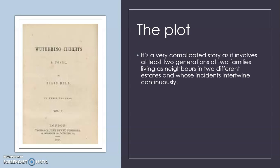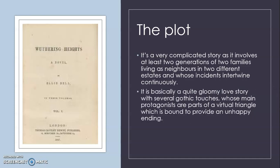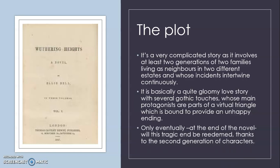The plot is a very complicated story because it involves two generations of two different families living as neighbours in two different estates in Yorkshire, whose incidents intertwine continuously. It is basically a quite gloomy, dark love story with several gothic touches, and its main protagonists are part of a love triangle. This triangle leads to an unhappy ending, at least in the first part of the novel. Only eventually, at the end, will this tragic end be redeemed and transformed into something different, thanks to the second generation of characters.